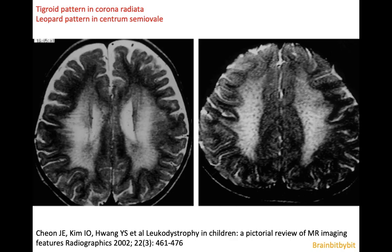On imaging, there is extensive white matter involvement, with sparing of the periventricular area and sparing of the perivascular-perivenular white matter, giving it a tigroid pattern on the MR slices at the level of the corona radiata. And if you go higher up, you see the dots, which give it a leopard pattern.